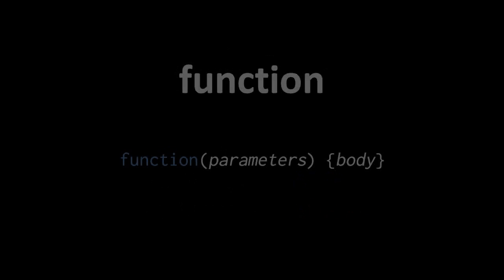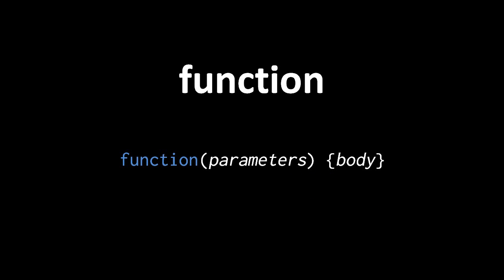A function definition in JavaScript can be written in the form of a literal — that is, it can be written as an expression which returns a new function. We write this as simply the reserved word function, followed by a pair of parentheses in which we list the parameters separated by commas, and then we follow that with the body written in curly braces. The syntax of JavaScript is free-form, so the body can be written on the same line, but usually the statements are going to be written each on their own line. You can put whatever spacing you want around the parentheses symbols and the curly braces.